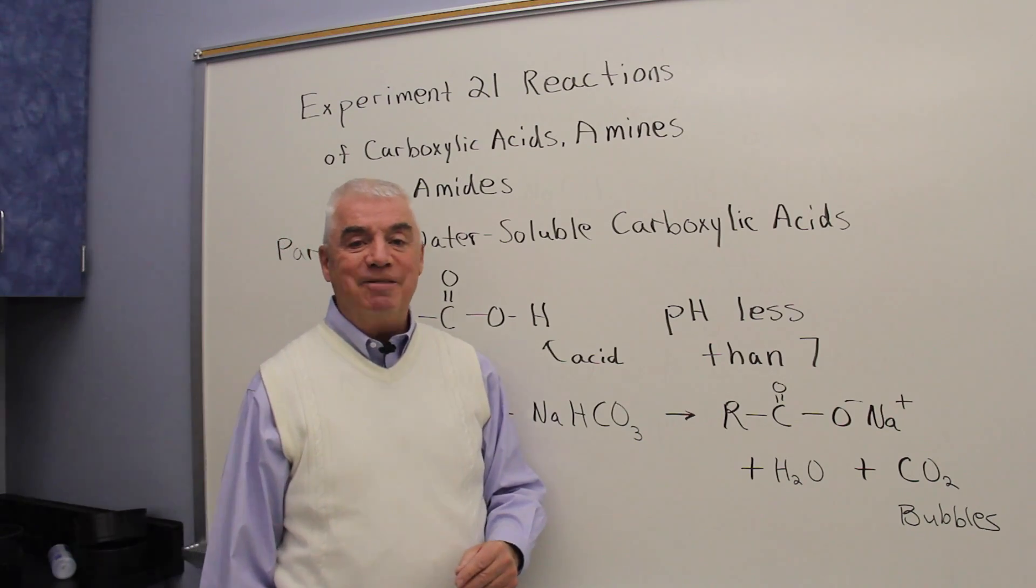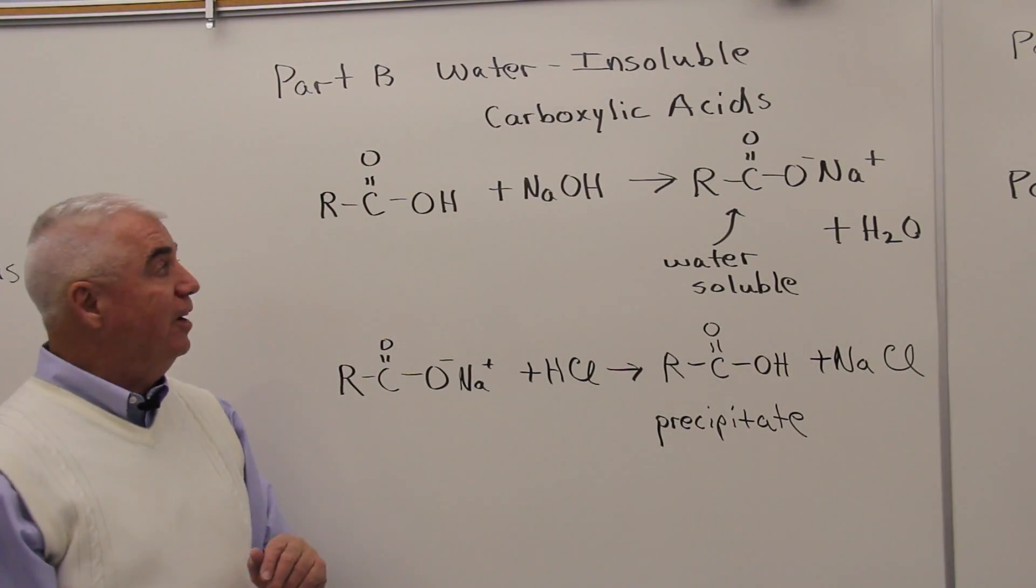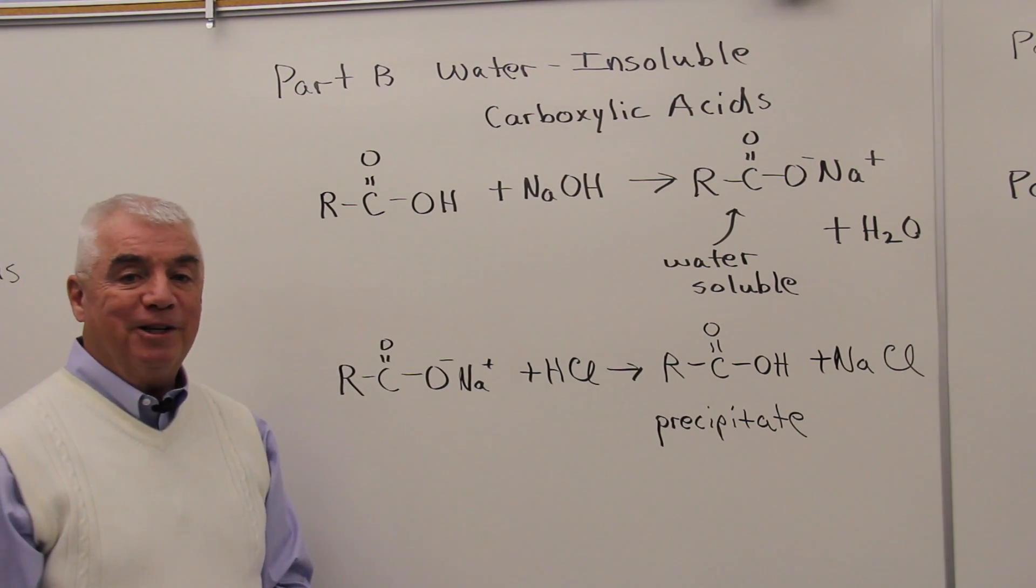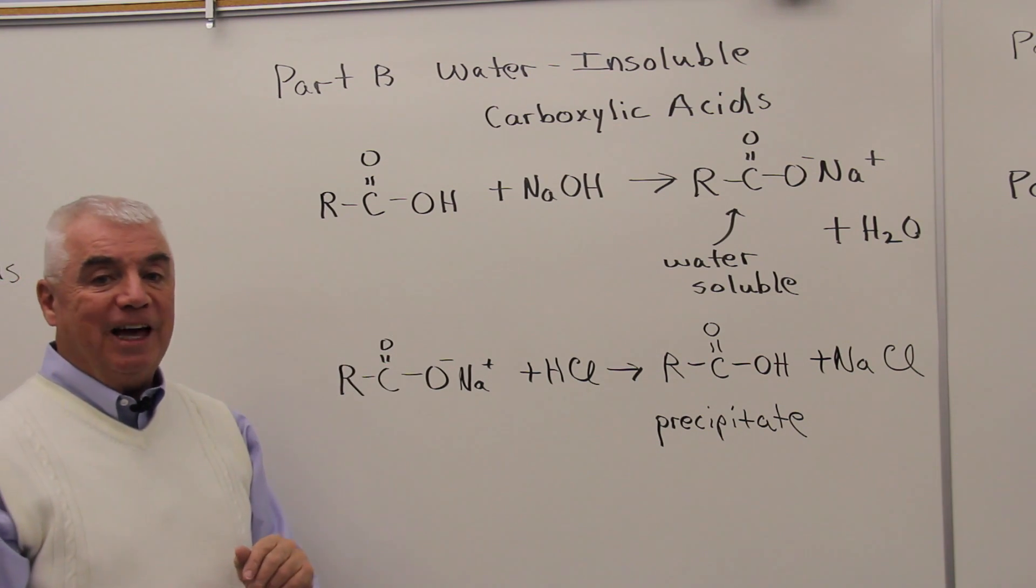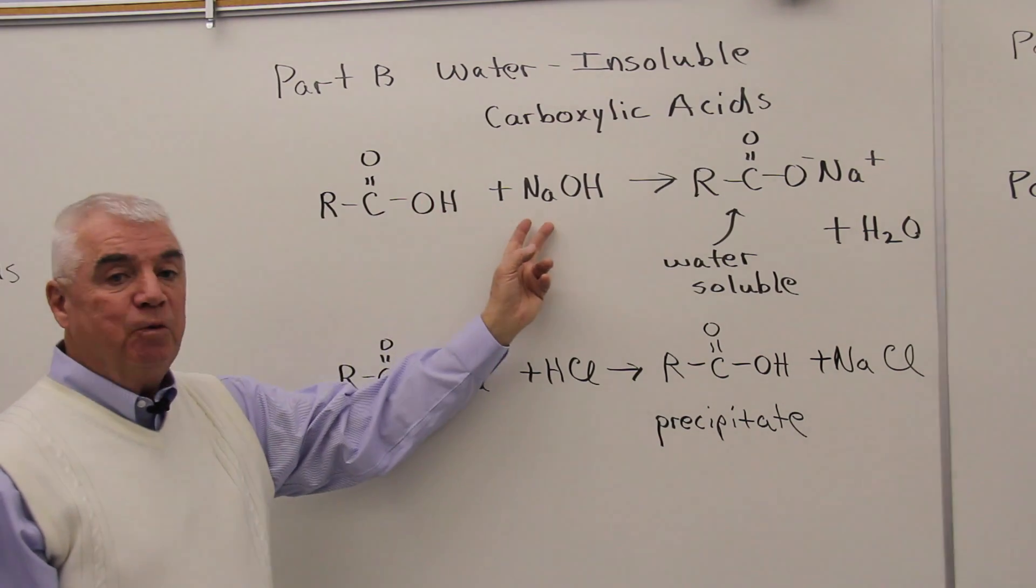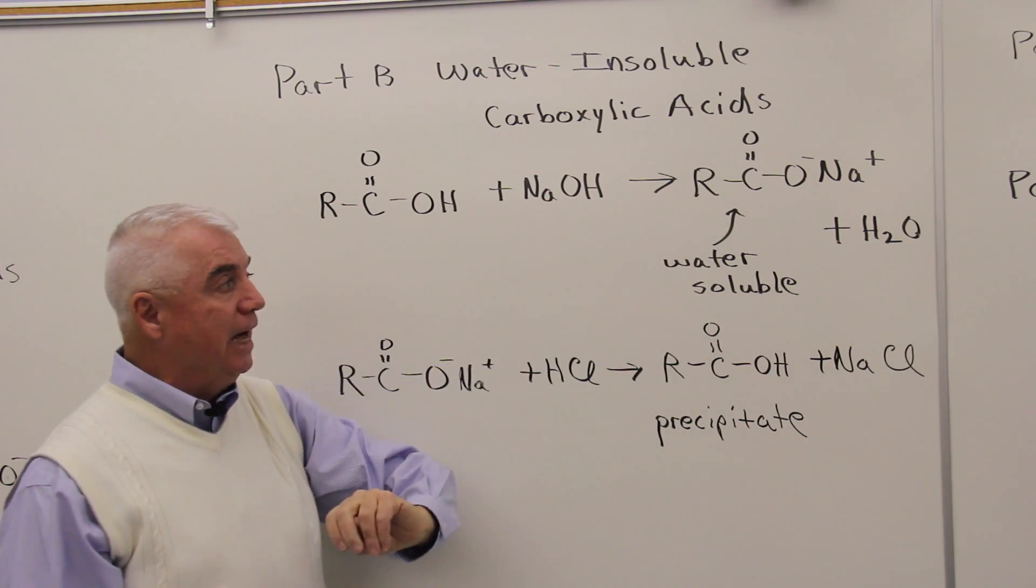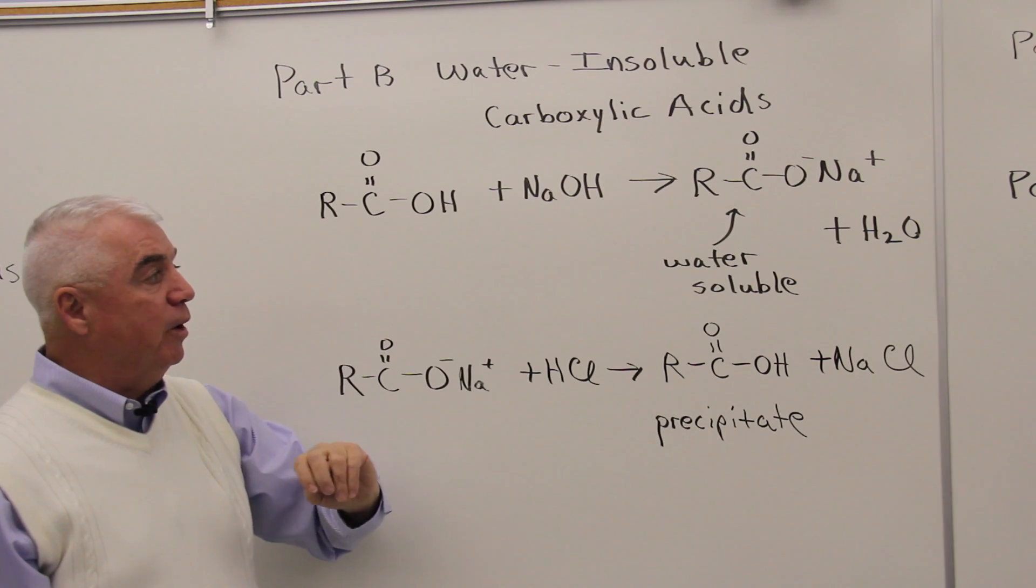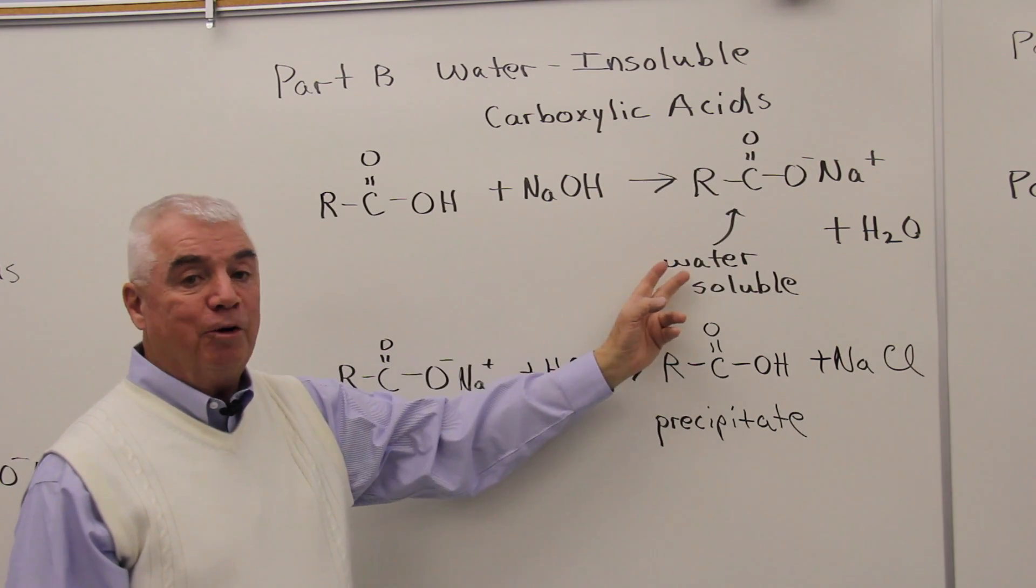Part B deals with water insoluble carboxylic acids. If we have an insoluble substance then we aren't going to be able to test the pH. So we have to identify the carboxylic acid in some other way. Well remember that acids react with bases and in this case we get the sodium salt of a carboxylic acid, a much more ionic material than what we started with. And these sodium salts are usually water soluble.